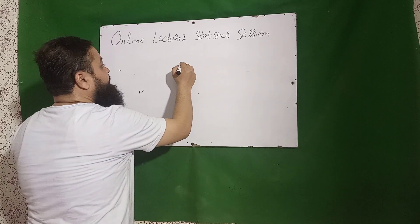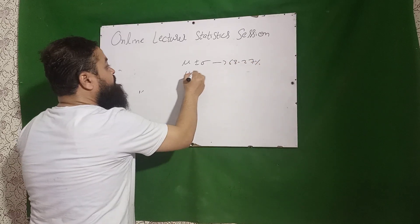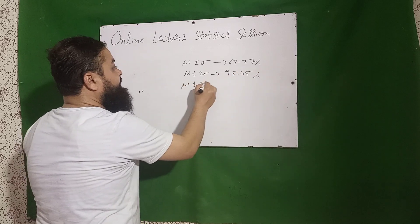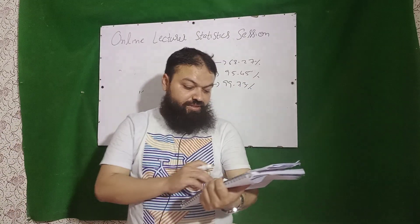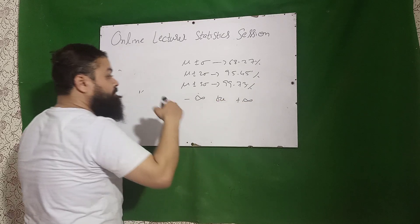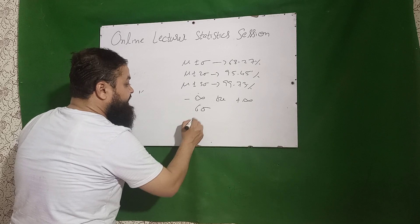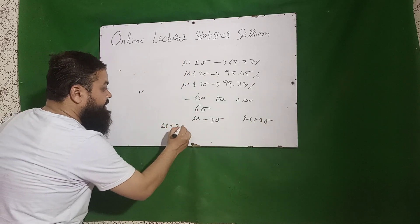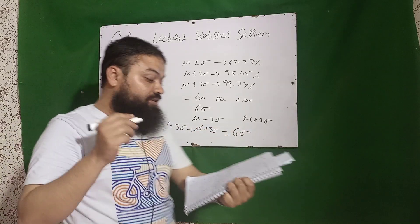We know that mu ± sigma contains 68.2% of values, mu ± 2 sigma contains 95.45% of values, and mu ± 3 sigma contains 99.73% of values — this is called the empirical rule. In normal distribution the range is minus infinity to plus infinity, but the practical range is 6 sigma. The minimum is mu minus 3 sigma and maximum is mu plus 3 sigma; subtracting gives 6 sigma as the practical range.